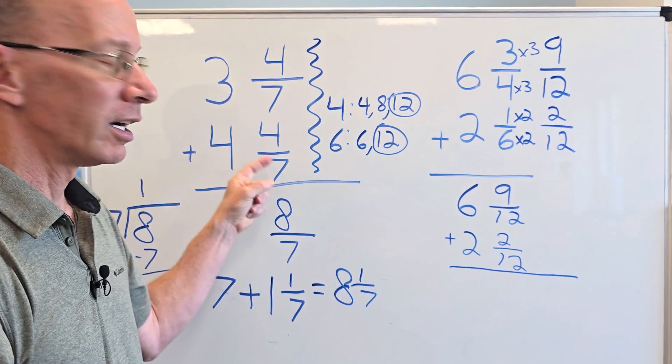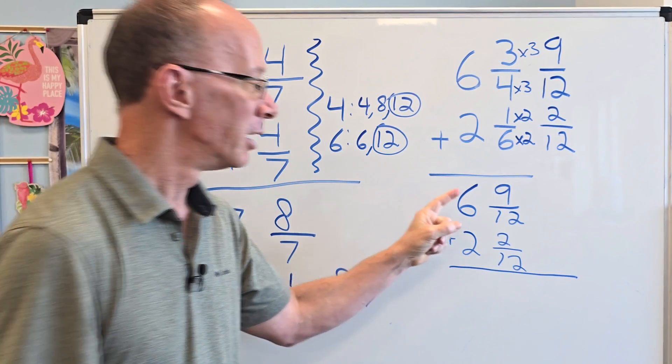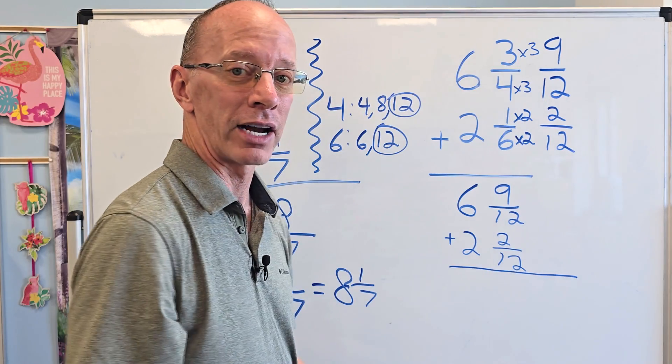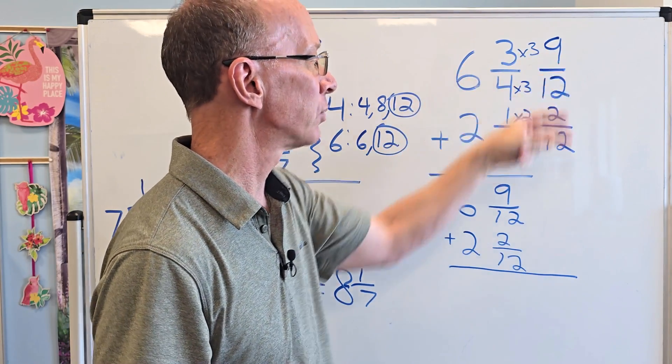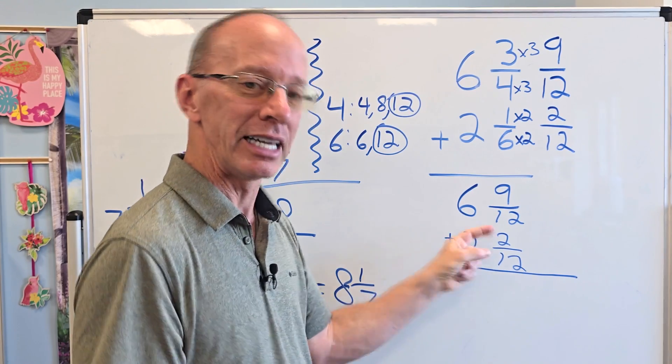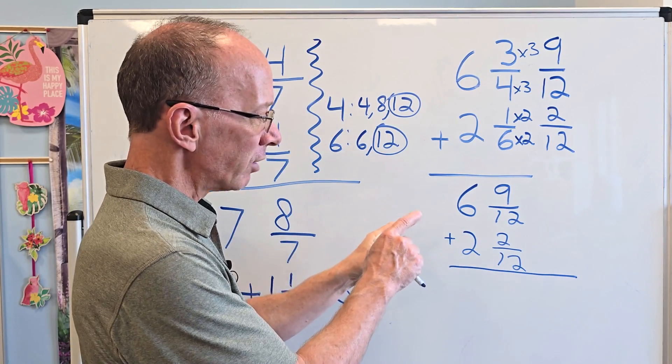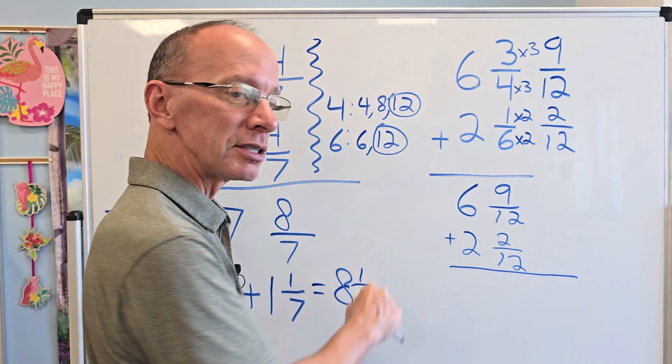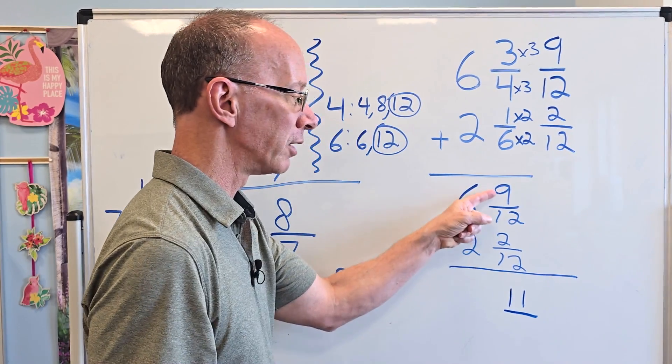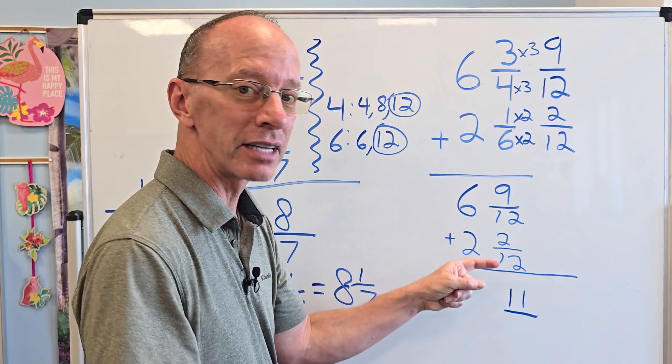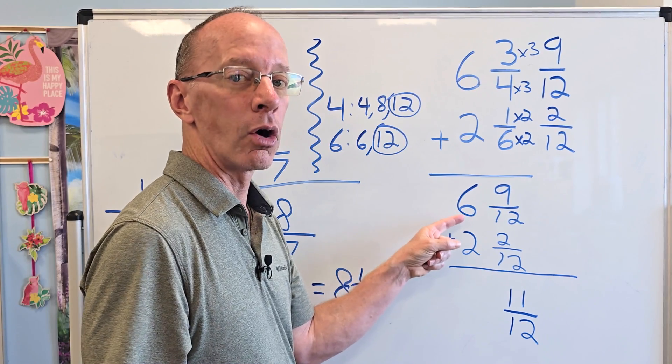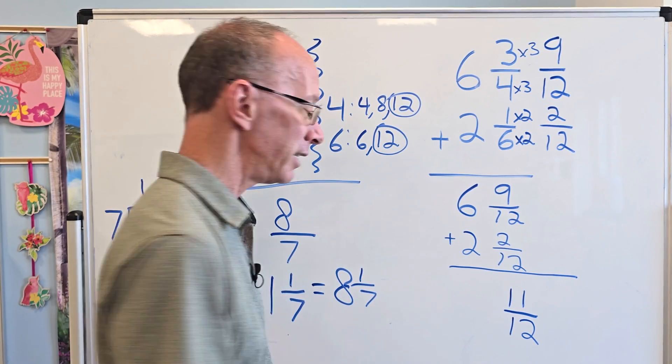Let me rewrite this a little bit. Let's clean this up so we can take a look at this. So I have 6 and 9 twelfths plus 2 and 2 twelfths. We're going to add these. Now we have the same denominators. The value of this fraction is the same as that fraction. The values did not change. 3 fourths is equal to 9 twelfths. 1 sixth is equal to 2 twelfths. We're just making something easier to work with. So let's add this right now. 9 plus 2 equals 11. That's my numerators. 12s, keep it the same. If the denominators are the same, keep it the same. And now add the whole numbers. 6 plus 2 equals 8.